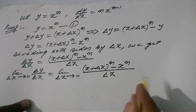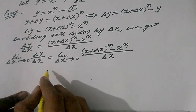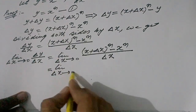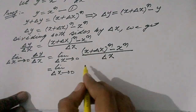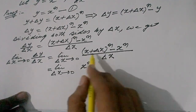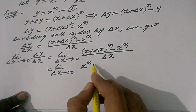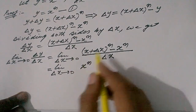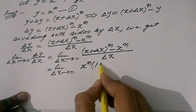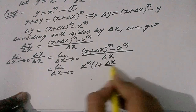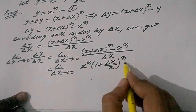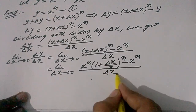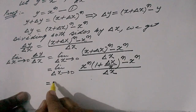Now let us take limit delta x tends to 0, and take x common out of this binomial. So we have x to the power n outside, because there is whole power n of the bracket. If we take x common out of these two terms inside the bracket, this x will have power n, and inside we have 1 plus delta x upon x, whole to the power n, minus x raised to the power n, divided by delta x.